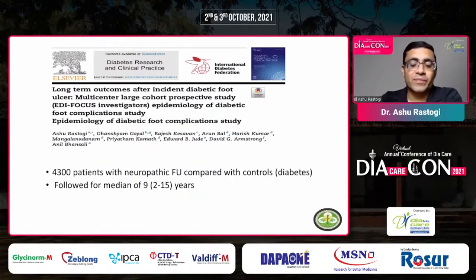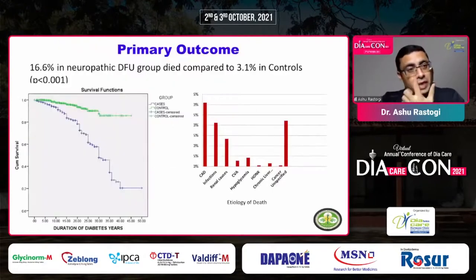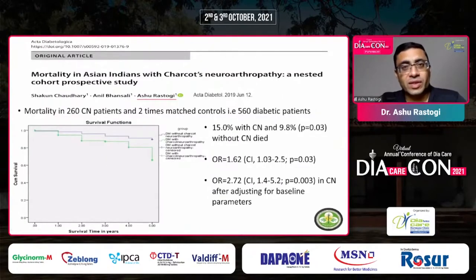This is one of the largest studies published from India, in Diabetes Research and Clinical Practice, from our center and four others, including 4,300 patients. We wanted to know what happens to patients who develop neuropathic foot ulcers. Surprisingly, we found that a patient with a foot ulcer has around five times increased risk of mortality — 16.6% of the ulcer group died compared to only 3.1% of controls over eight years, as shown by this Kaplan-Meier curve.